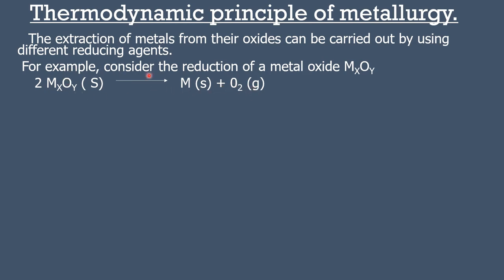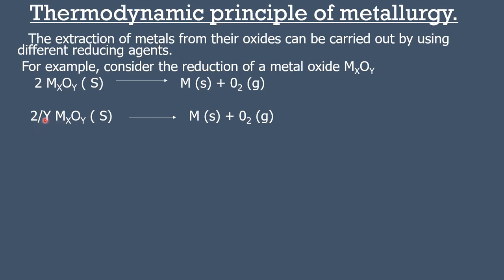We are removing oxygen from the metal oxide. Now, we have to balance this equation. On the left-hand side, only one oxygen atom is present, while on the right-hand side there are two oxygen atoms. So, we put 2 on the left-hand side. The number of oxygen atoms on the left-hand side becomes 2Y. Dividing 2Y by Y gives 2, so we multiply by Y on the left-hand side, and the oxygen atoms are now balanced on both sides.